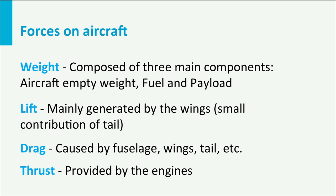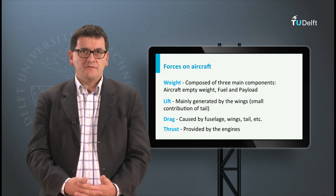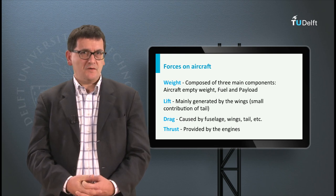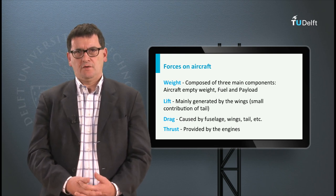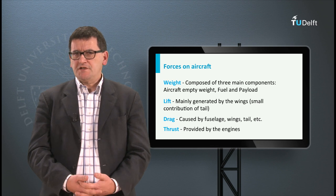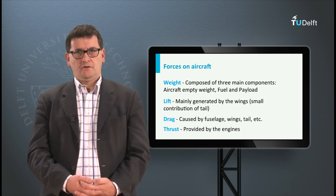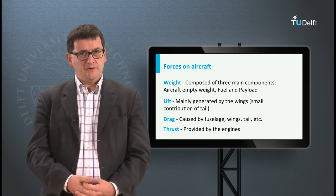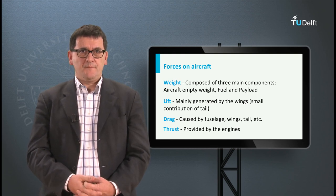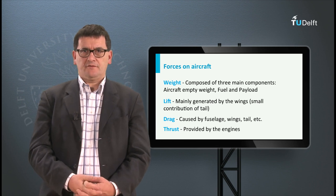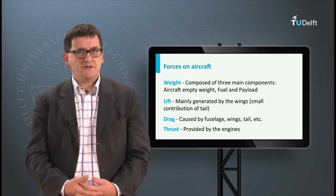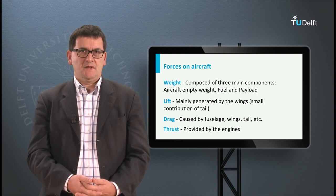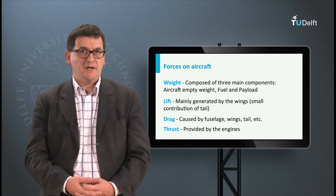Looking briefly at these forces: the weight of the aircraft includes the aircraft empty weight, the payload like passengers or cargo, and the weight of the fuel. The lift is generated by the wing with a small contribution of the horizontal tail plane. The drag is caused by friction between the aircraft surfaces and the air, and by pressure differences around the aircraft — all aircraft parts contribute to this drag: the fuselage, the tail, etc. And finally the thrust is provided by the engines.